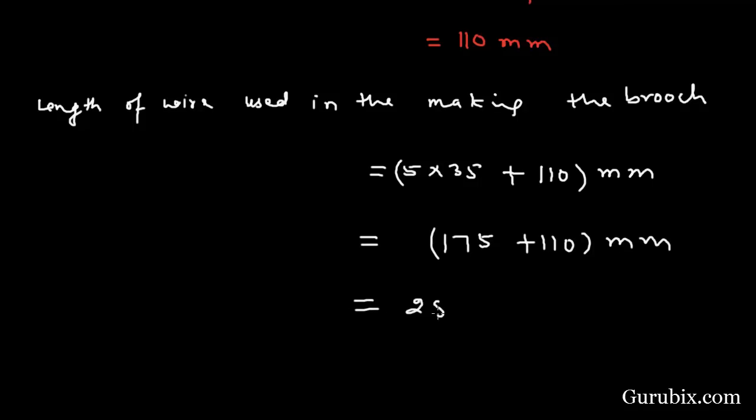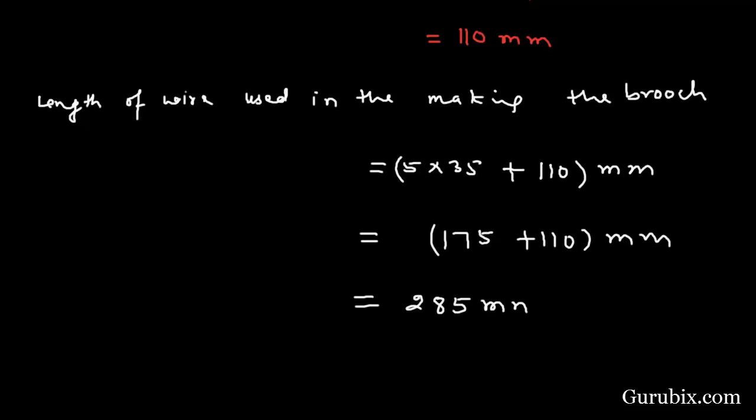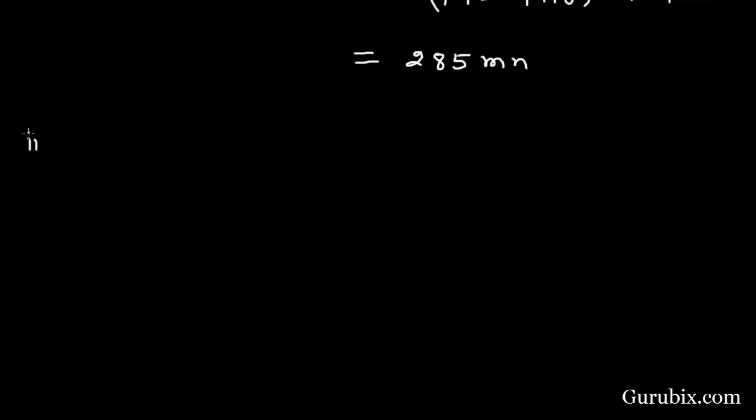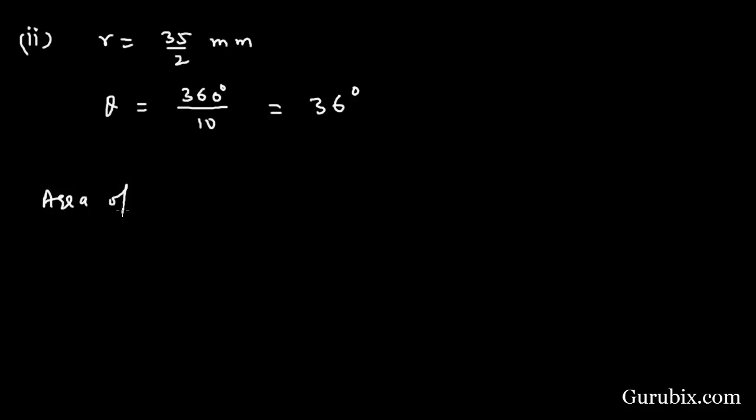Now we shall find the area of each sector. Radius is 35 over 2 millimeters and theta is 360 degrees over 10, this means 36 degrees. Therefore area of each sector is...